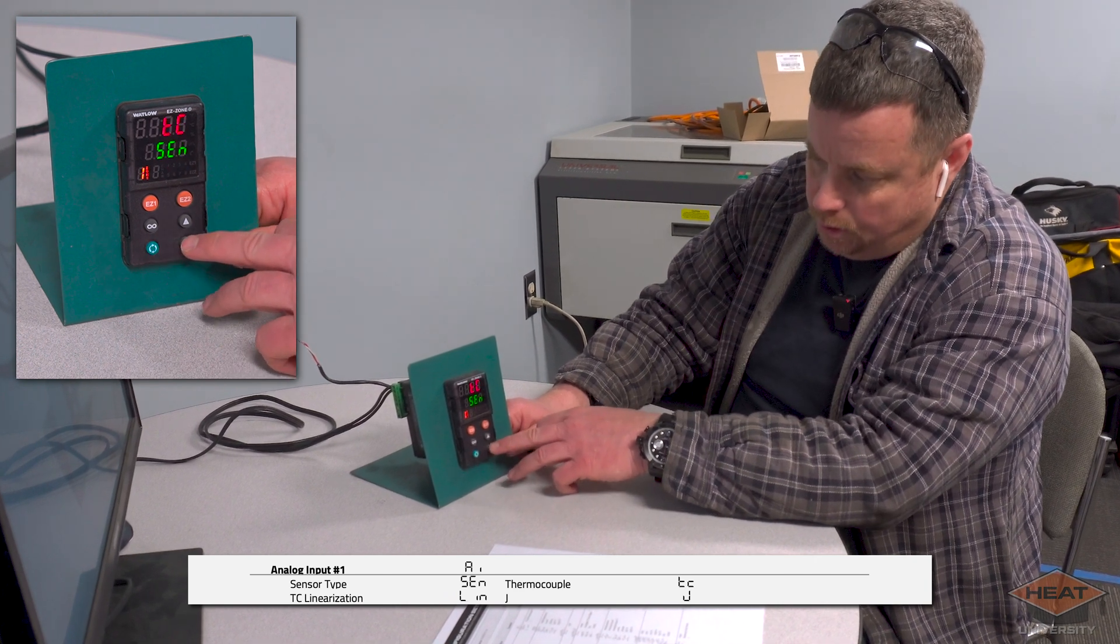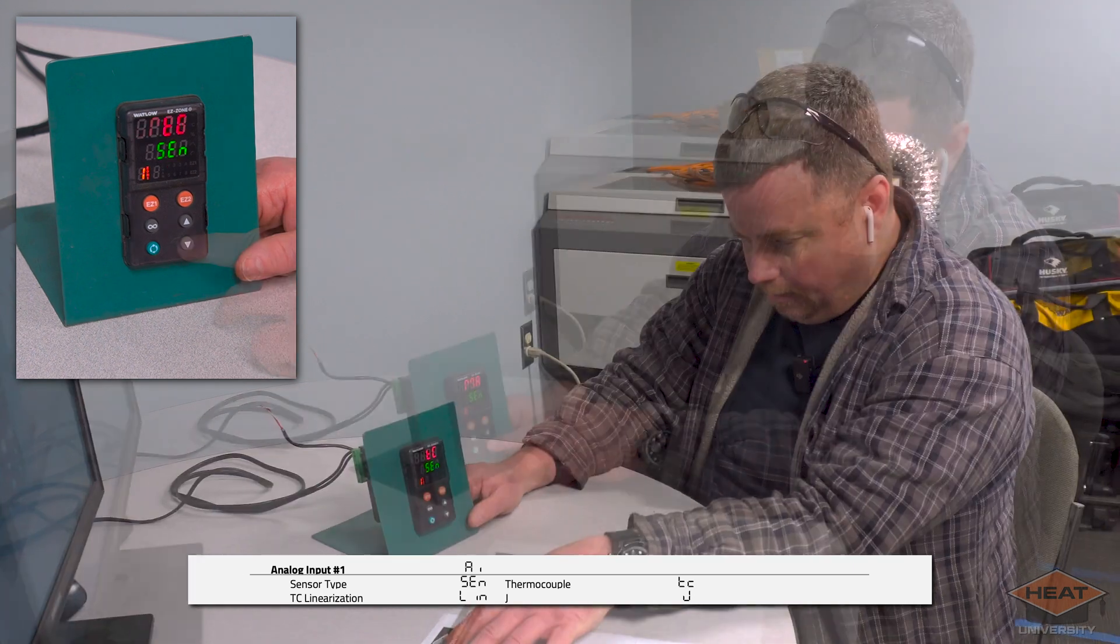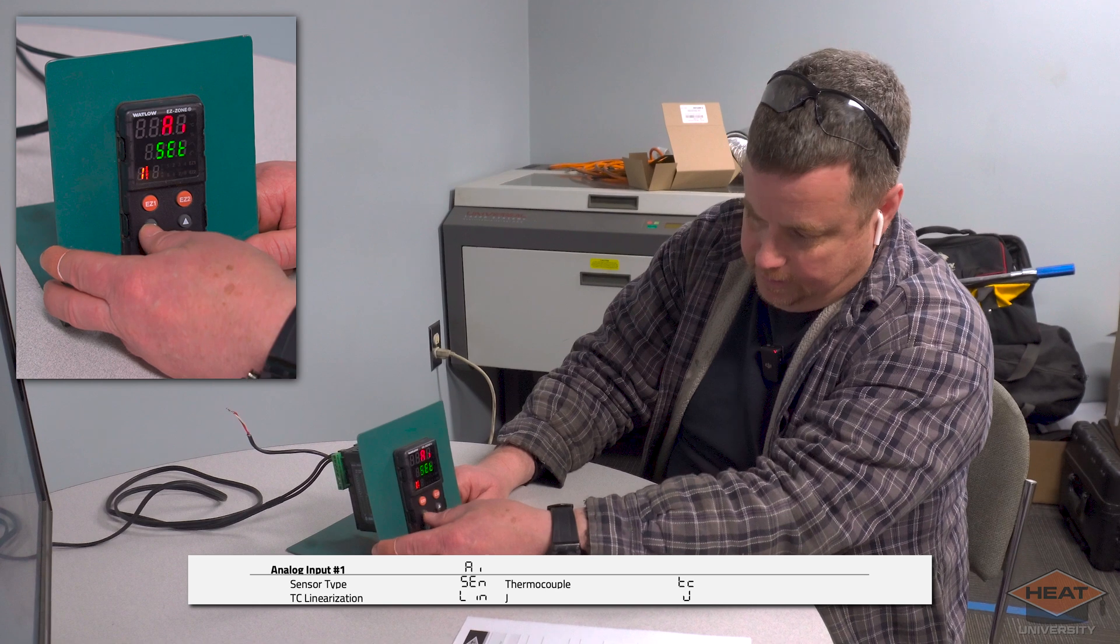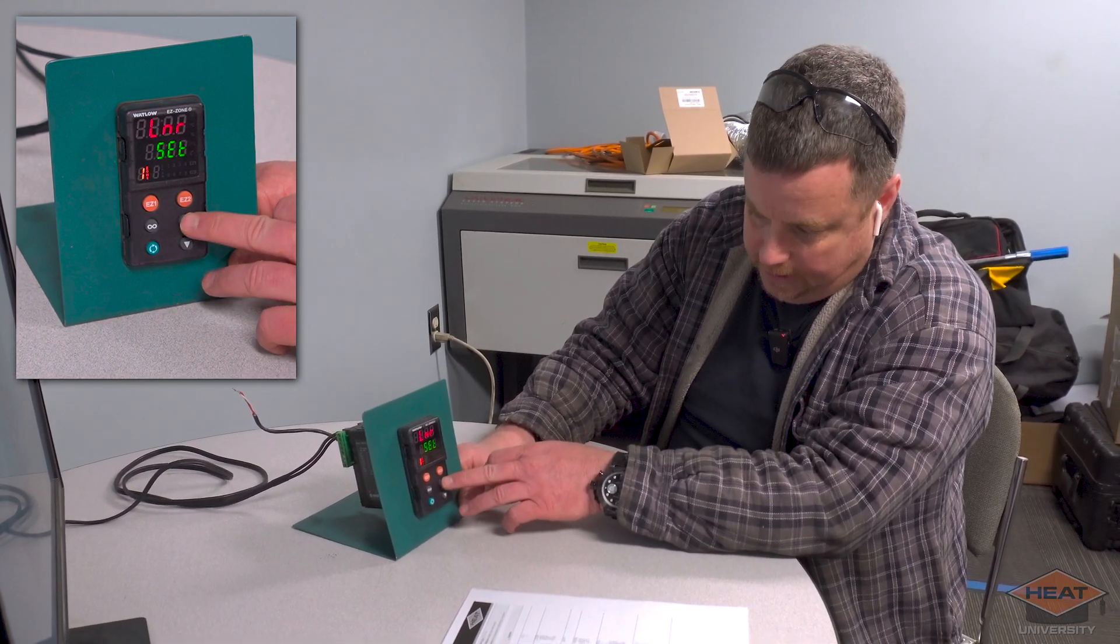Set, and I'm going to cycle through. If this was something else, then you would select something else. On most of our systems it'll be a J thermocouple and you'll just set it up for J thermocouple. Then you'll hit the infinity button once.